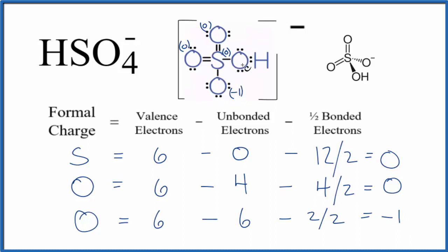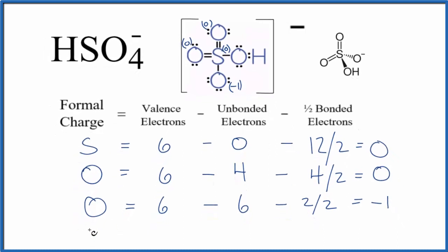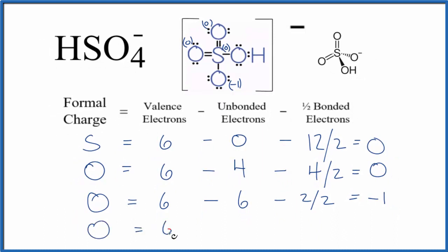Let's do the oxygen bonded to the sulfur and the hydrogen. We have six because it's oxygen. We have unbonded electrons: two, four. Minus one half of the bonded—we have the bond here, so that's two, and then we have the bond here, another two. So four over two.